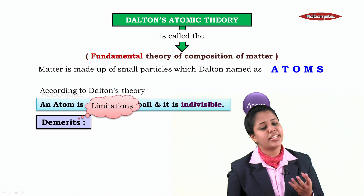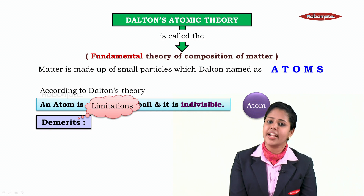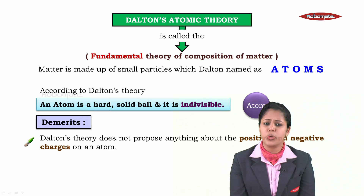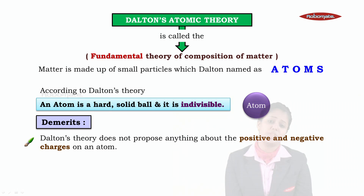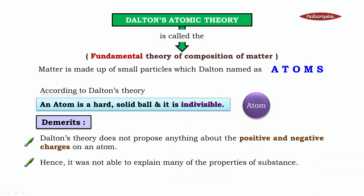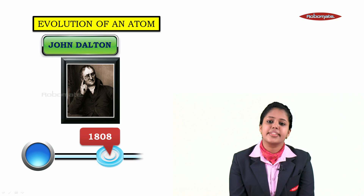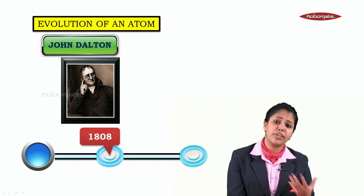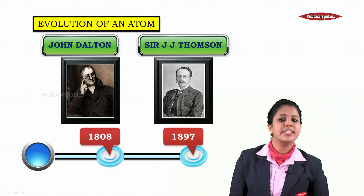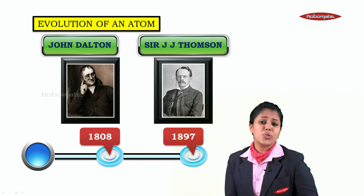Let's see what were the demerits or the limitations of Dalton's atomic theory. Dalton's theory does not propose anything about the positive and negative charge of an atom. Hence it was not able to explain many of the properties of a substance. So later on, after Dalton, the second person to continue with the evolution of an atom was in the year 1897 — Sir J.J. Thompson.